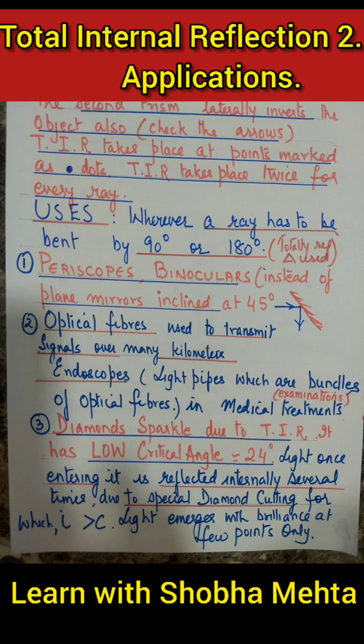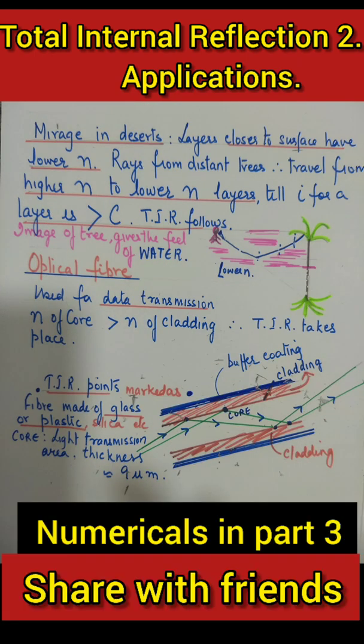Similarly, diamonds sparkle due to total internal reflection because the critical angle is very small. Once light enters a diamond, it is multiple times reflected inside and then comes out from only a few points.